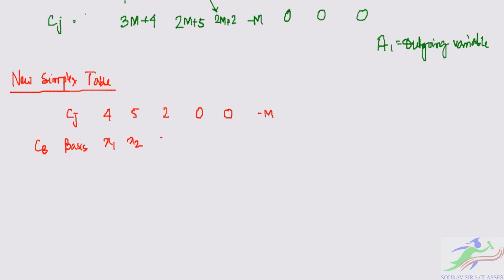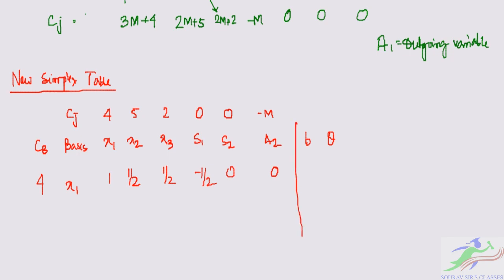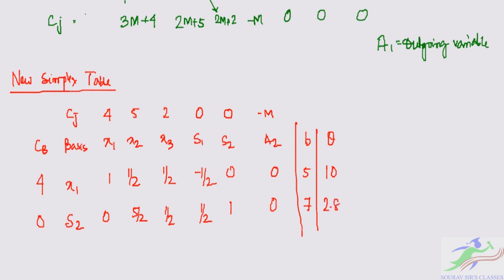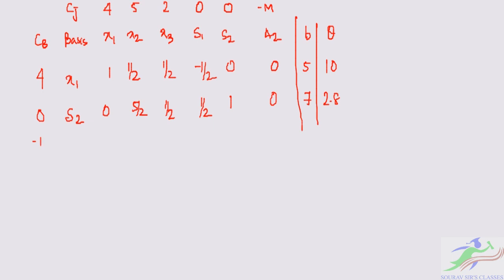The second simplex table has column headers Cj: 4, 5, 2, 0, 0, −M for x1, x2, x3, s1, s2, a2. The rows are: CB = 4, basis = x1, row [1, 1/2, 1/2, −1/2, 0, 0], B = 5, theta = 10; CB = 0, basis = s2, row [0, 5/2, 1/2, 1/2, 1, 0], B = 7, theta = 2.8; CB = −M, basis = a2, row [0, 1/2, 1/2, 1/2, 0, 1], B = 1, theta = 2.